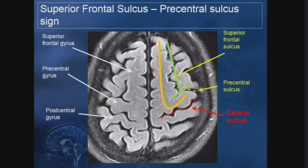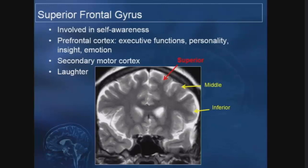The superior frontal gyrus functions in self-awareness and involves the prefrontal cortex where executive functions reside. It also contains the secondary motor cortex. Interestingly, stimulation of the superior frontal cortex can produce laughter in some patients. When dealing with cortical anatomy, if you use superior, middle, and inferior you'll cover several gyri across multiple lobes — frontal, occipital, and temporal — except the parietal lobe, which has a superior and inferior parietal lobule.